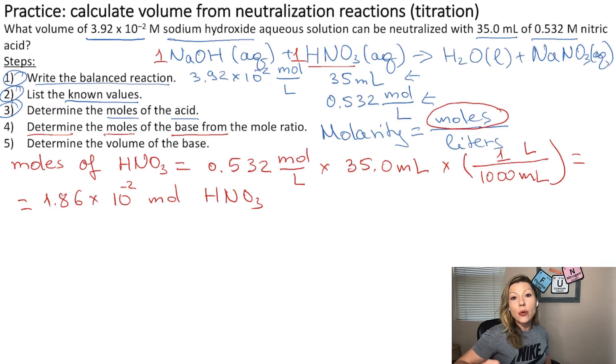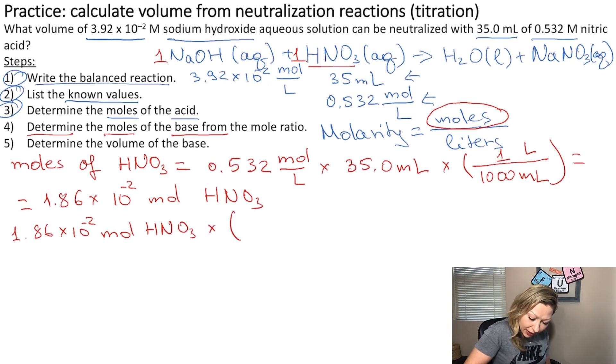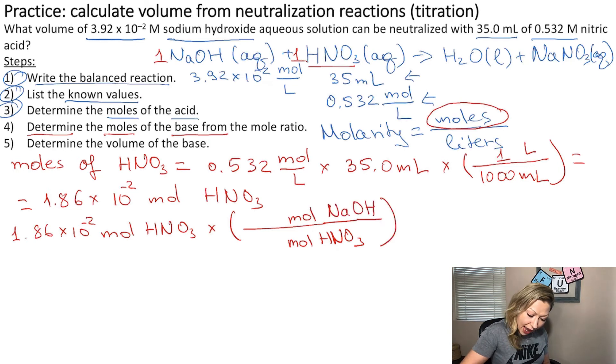But if the mole ratio would be different, we could use the following calculation: 1.86 times 10 to the negative second moles of HNO3 multiplied by a fraction from the mole ratio. The moles of HNO3 are on the bottom, moles of NaOH on top, and the ratio is 1 to 1. So the moles of NaOH is the same, 1.86 times 10 to the negative second moles.